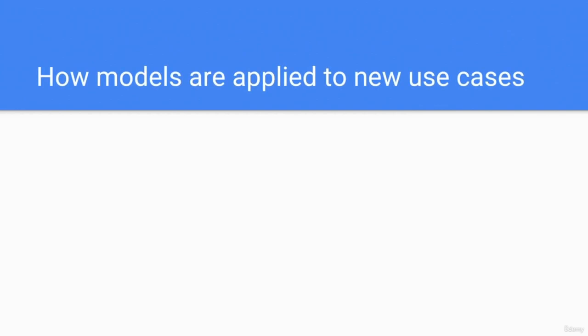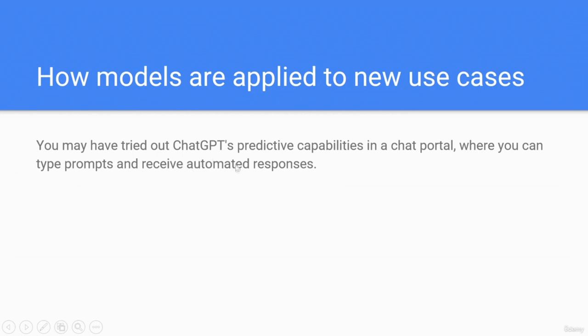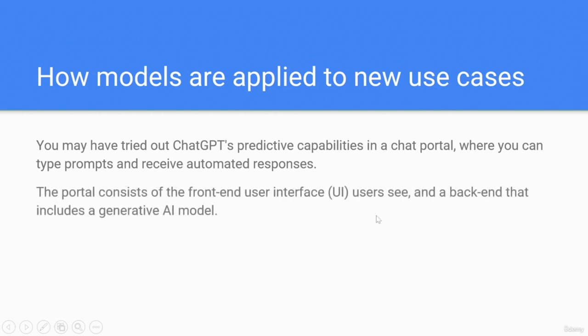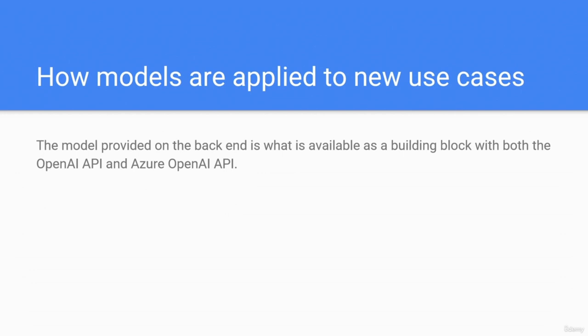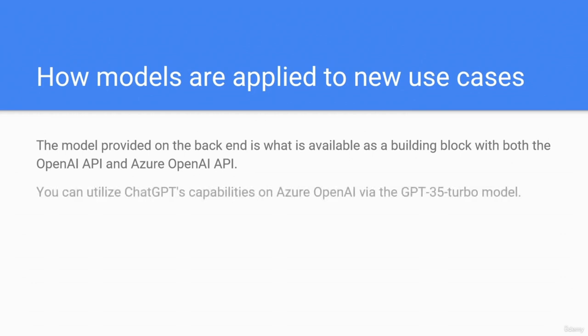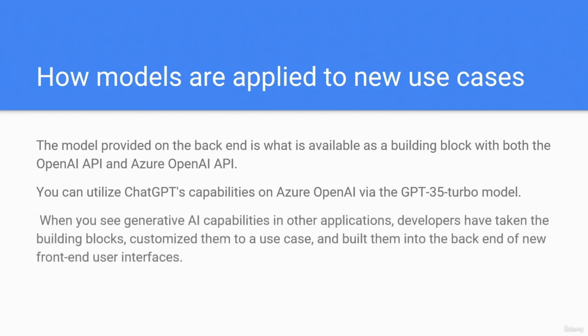How models are applied to new use cases. You may have tried out ChatGPT's predictive capabilities in the chat portal where you type prompts and receive automated responses. The portal consists of a front-end user interface and a back-end that includes a generative AI model — the combination of which can be described as a chatbot. The model on the back-end is available as a building block with both the OpenAI API and Azure OpenAI API. You can utilize ChatGPT's capabilities on Azure OpenAI via the GPT-3.5 Turbo model.